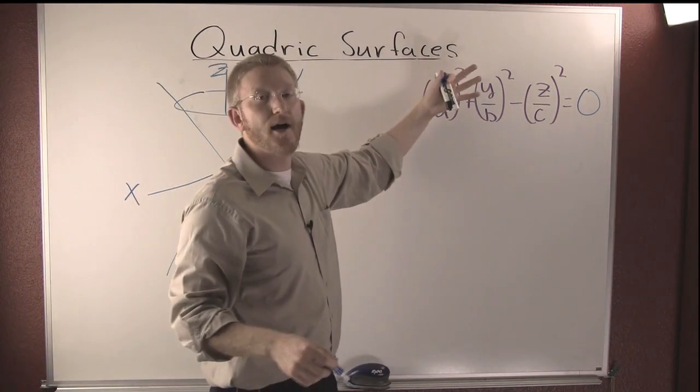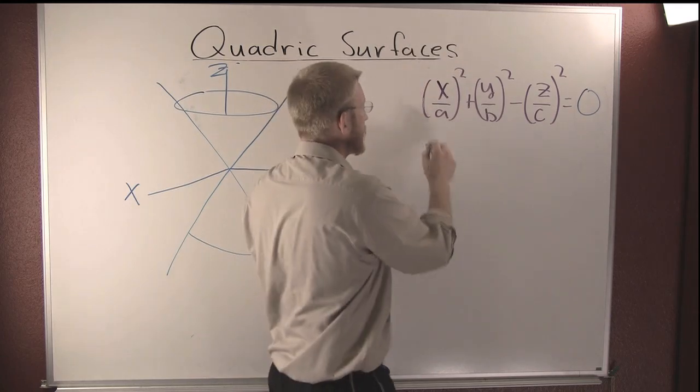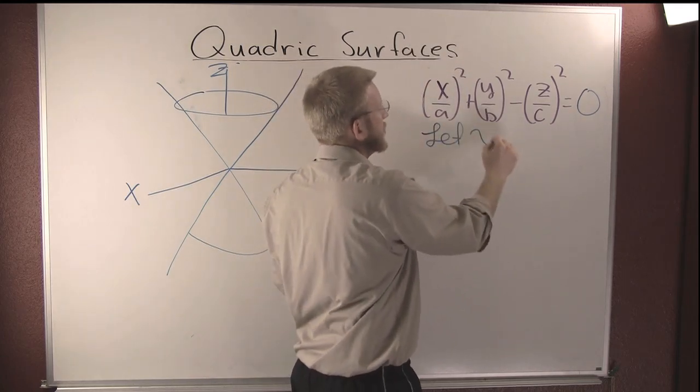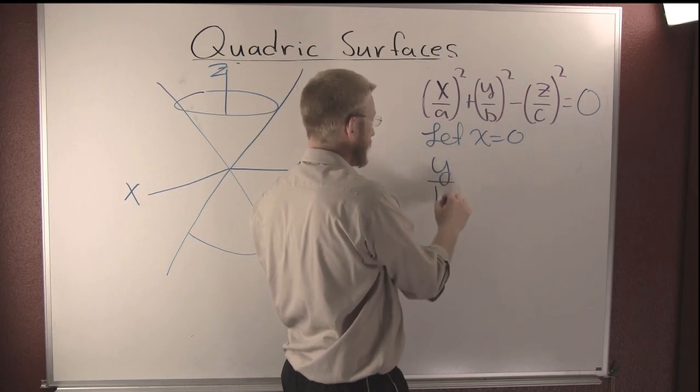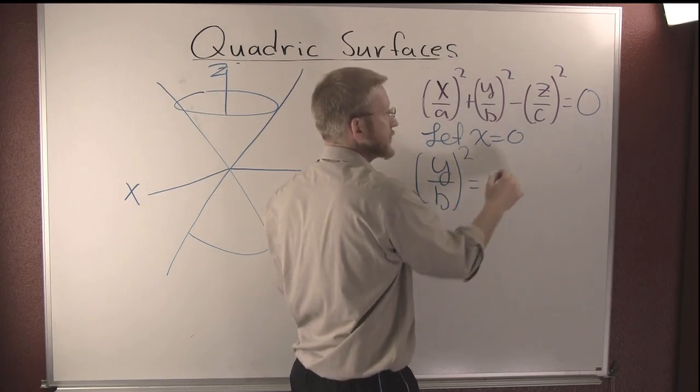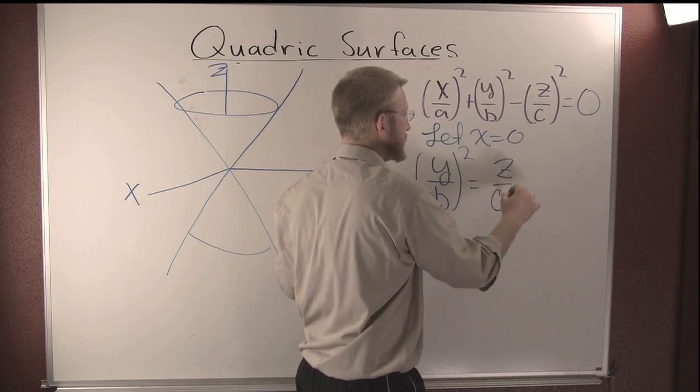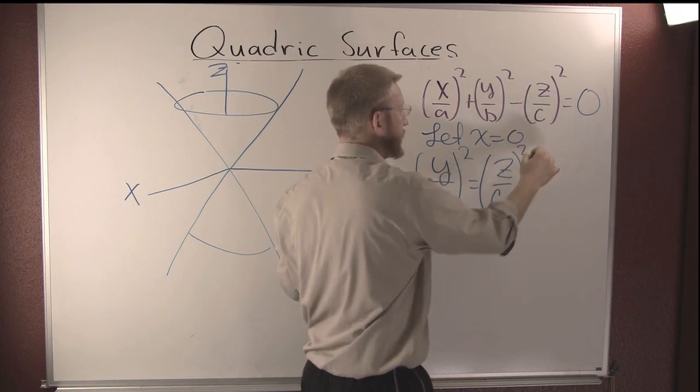Our traces aren't hyperbolic at all. Let's just look. Let x equals zero. Then you have y over b squared is equal to z over c squared.